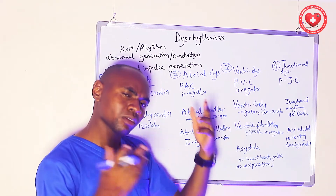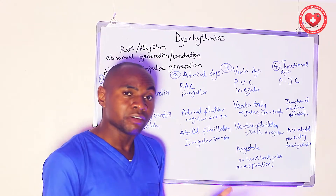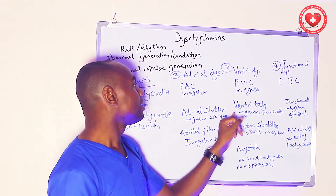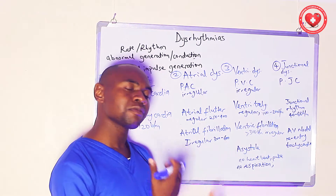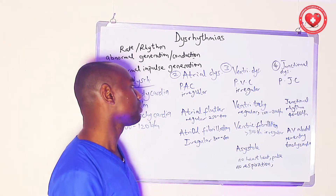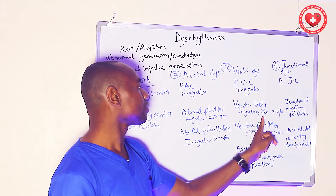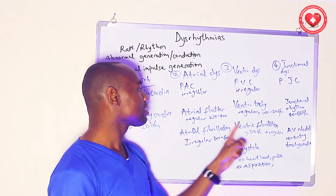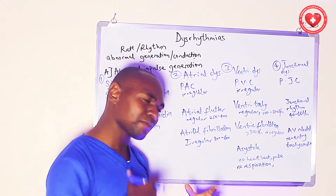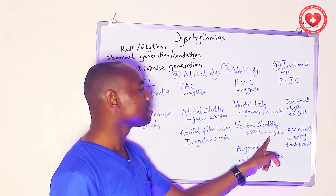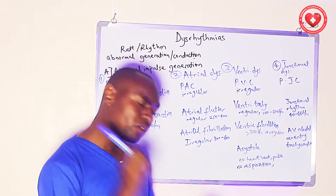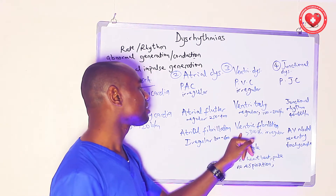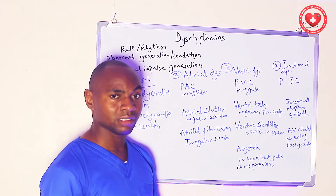The next category is ventricular dysrhythmias, meaning the ventricles generate abnormal beats. Premature ventricular contractions are usually irregular. Ventricular tachycardia is a very fast rate of impulse release by the ventricles — irregular, at a rate of 100 to 200 beats per minute. Ventricular fibrillation occurs when the ventricles release impulses at greater than 300 beats per minute; it is very irregular, unsynchronized, and highly disorganized — and it is the most fatal of all, likely causing death if not treated.